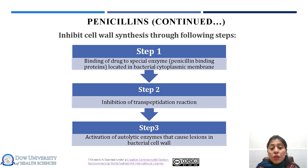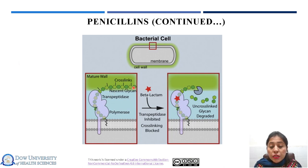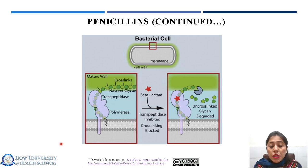As a result, the cross-linking of the peptidoglycan strands is disrupted and the bacterial cell wall becomes weak and prone to lysis. This is the animated representation of the action of the beta-lactam antibiotic. On the left side you can see the normal, mature cell wall. After introduction of the beta-lactam antibiotic, it inhibits the transpeptidation reaction and blocks the cross-linking of residues. Ultimately, uncross-linked chains are formed and the cell wall degrades, causing lysis of the bacterial cell.